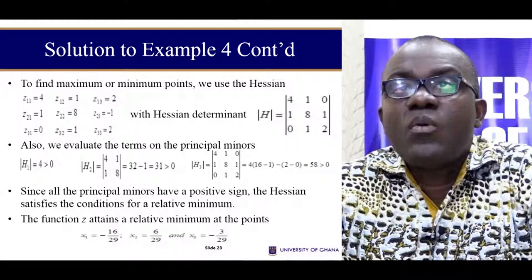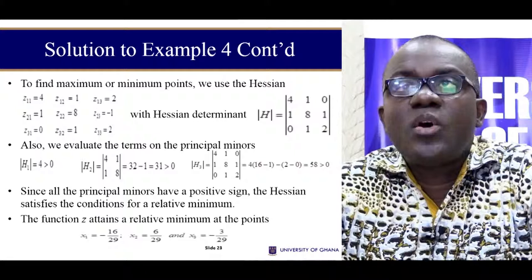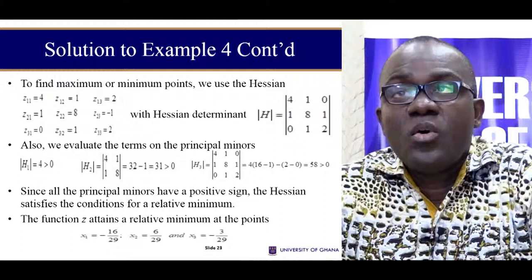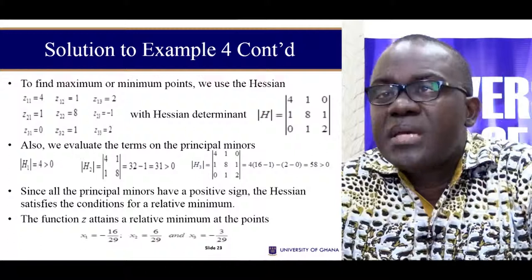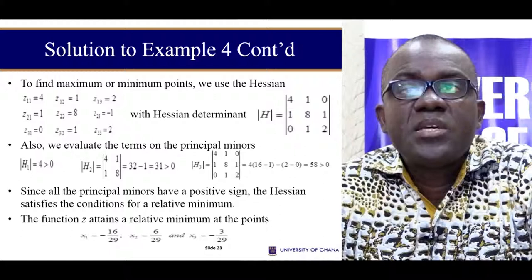The solutions are x3, x2, and then the other one. Now we find the second-order derivatives. When you take the second-order derivatives, we get this equation, so we have formed our Hessian. And this is our H1, our H2, and this is our H3. The next point is to see the values of these H1, H2, and H3.